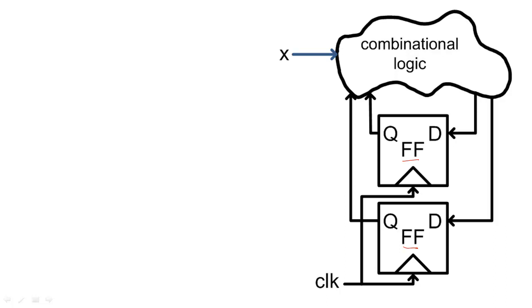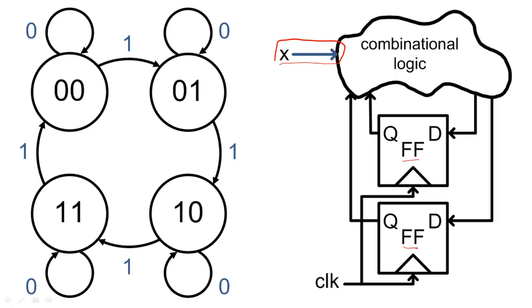However, we can add inputs to the system that can alter the order of state executions. When we add an input to the system, we label the state transition arrows with the value of the inputs to show which state transition will occur, based on the input. For example, if we are in state 01, we will transition to state 10 on an input of 1, but we will transition to state 11 on an input of 0.